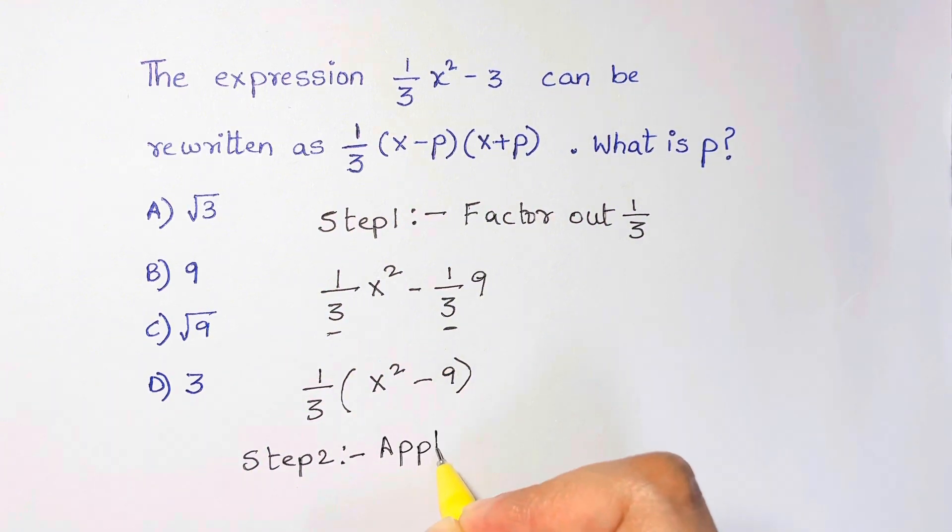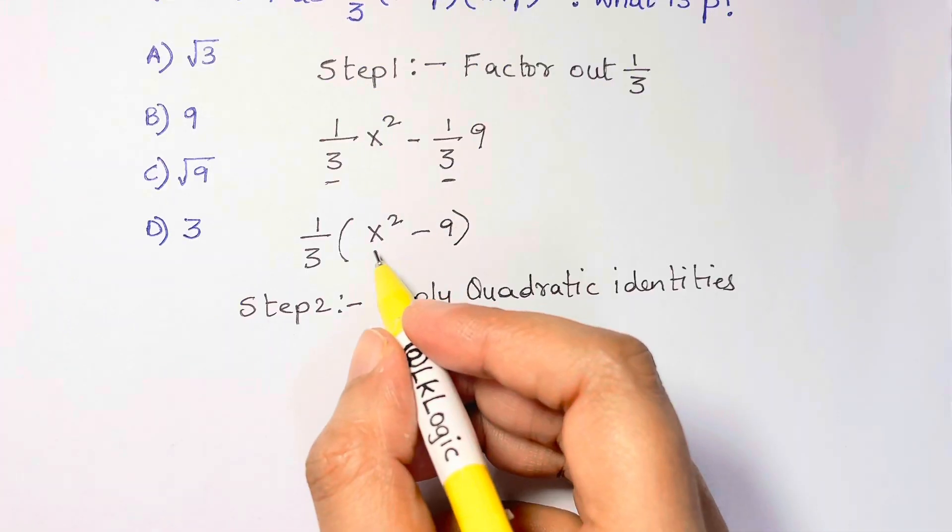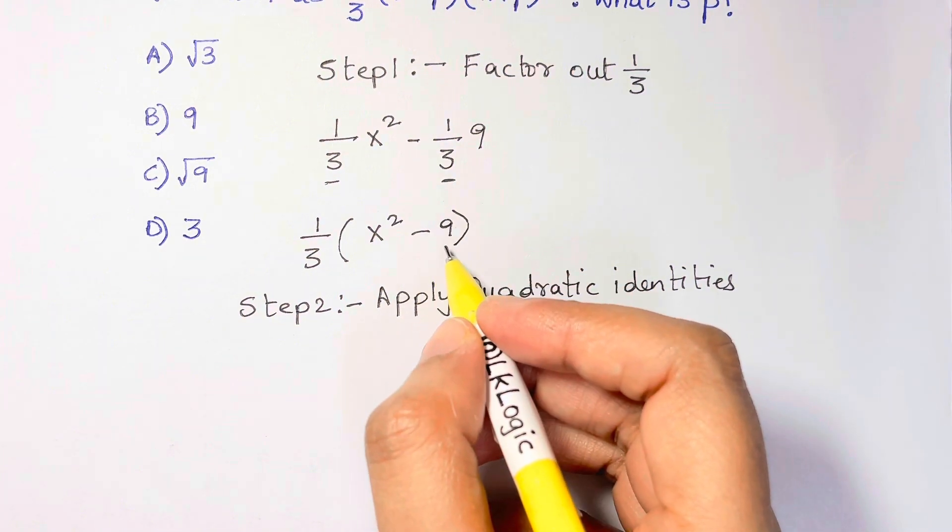In this case, you're going to use your difference of squares because you can think of this 9 in a creative way.